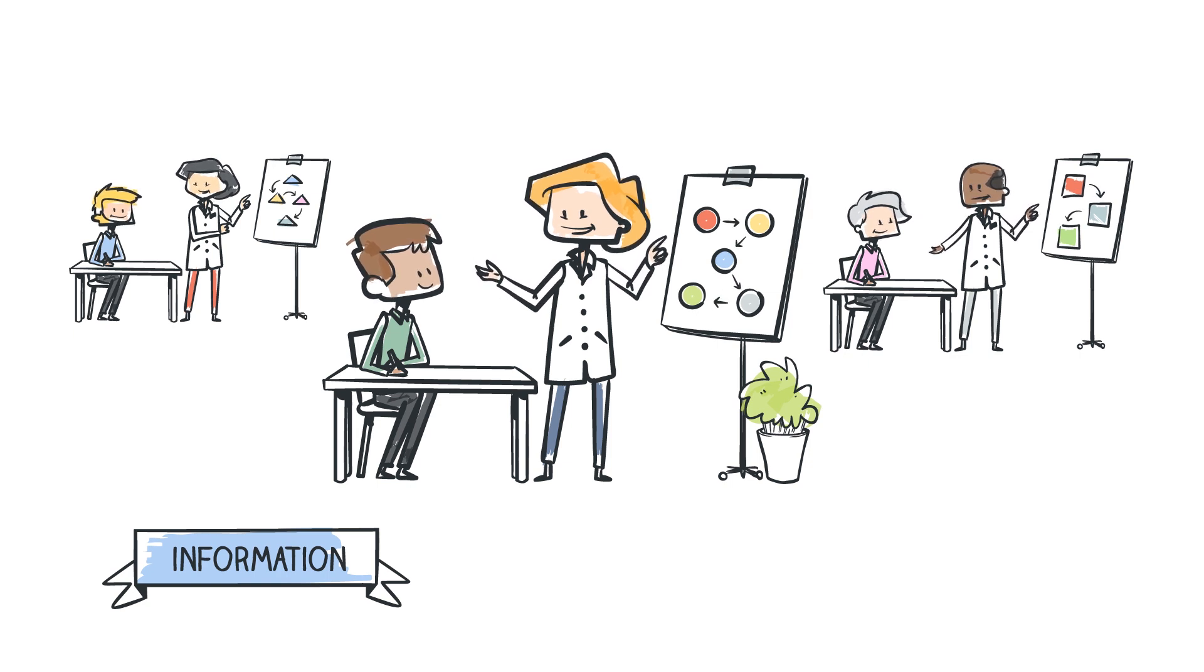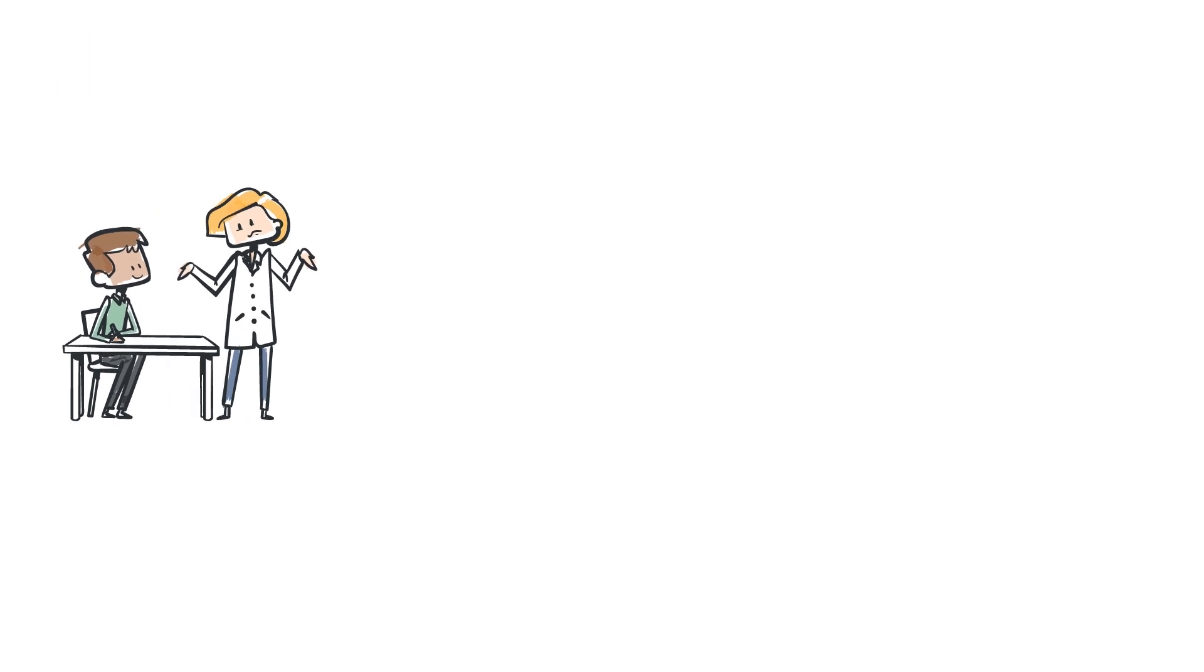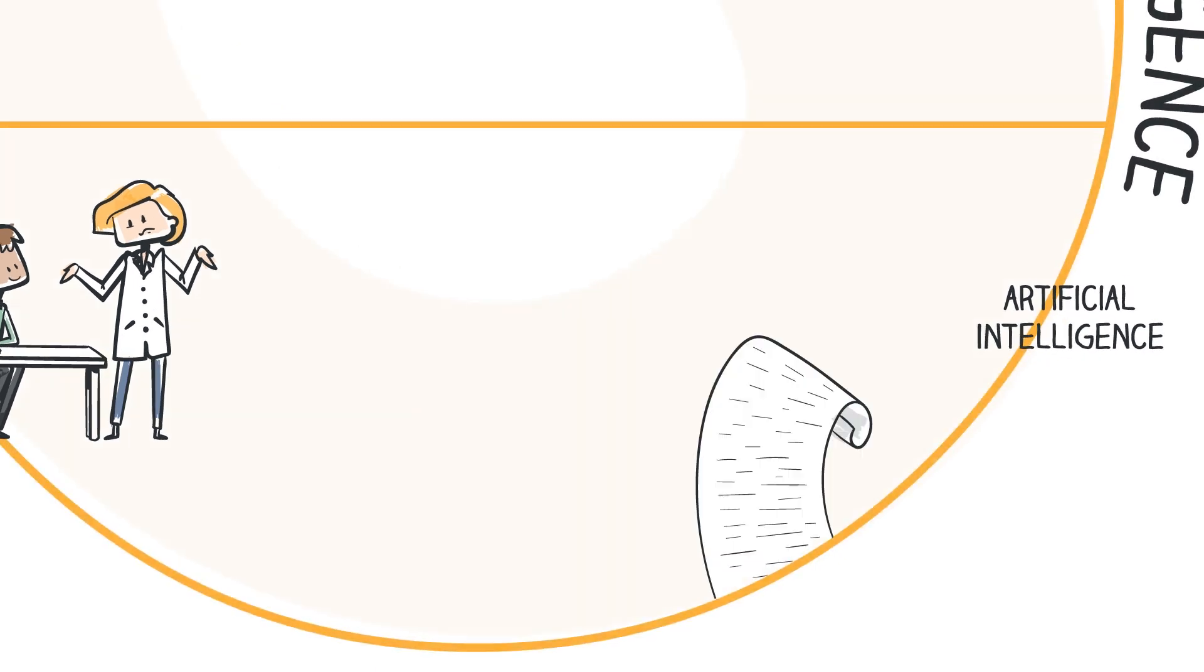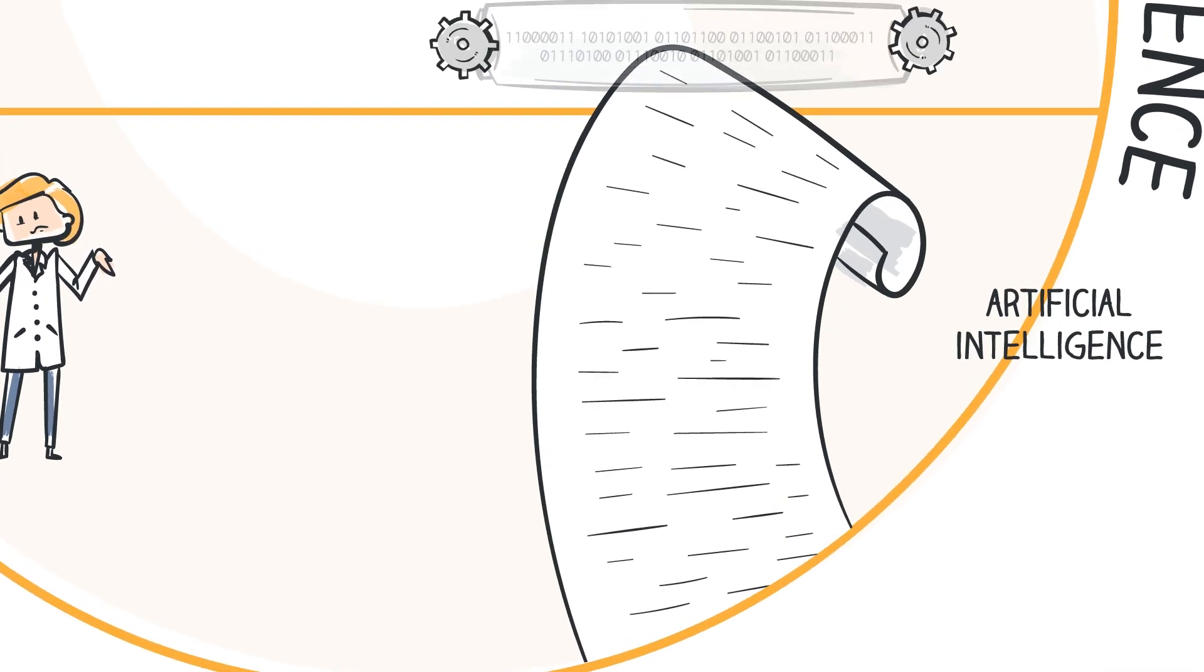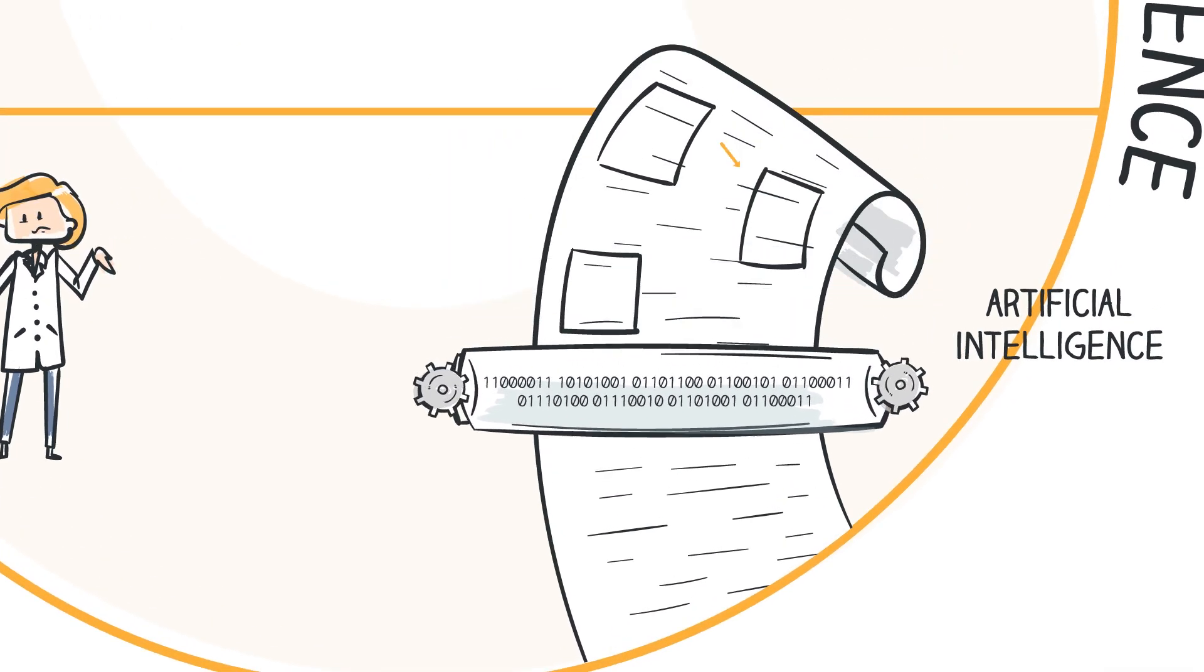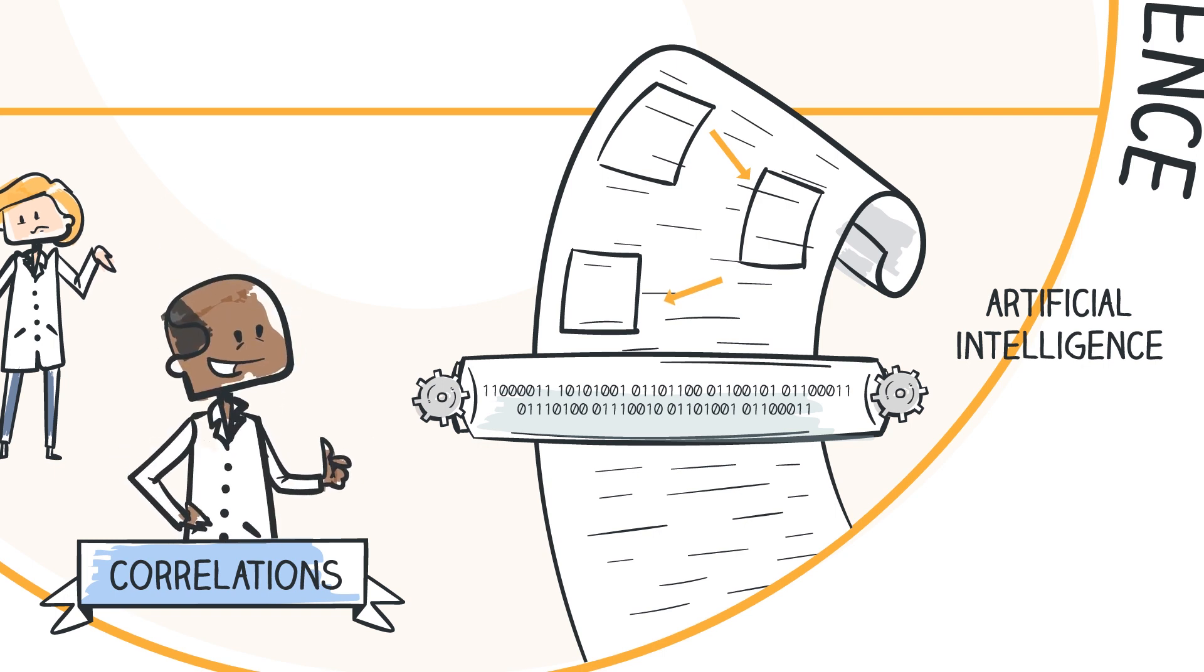However, in some situations, not even the experts know everything. This is where artificial intelligence comes in. Using historical data, artificial intelligence algorithms can detect correlations that human experts might have missed.